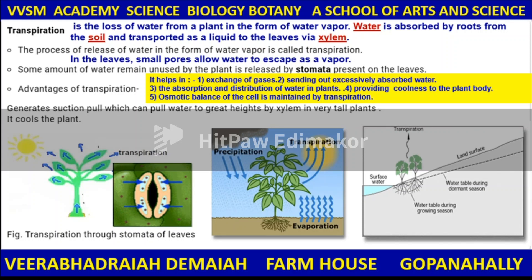Transpiration is the loss of water from a plant in the form of water vapor. Water is absorbed by roots from the soil and transported as a liquid to the leaves via xylem. This process helps in exchange of gases, sending out excessively absorbed water, aiding in absorption and distribution of water in plants, providing coolness to the plant body, and maintaining the osmotic balance of the cell.